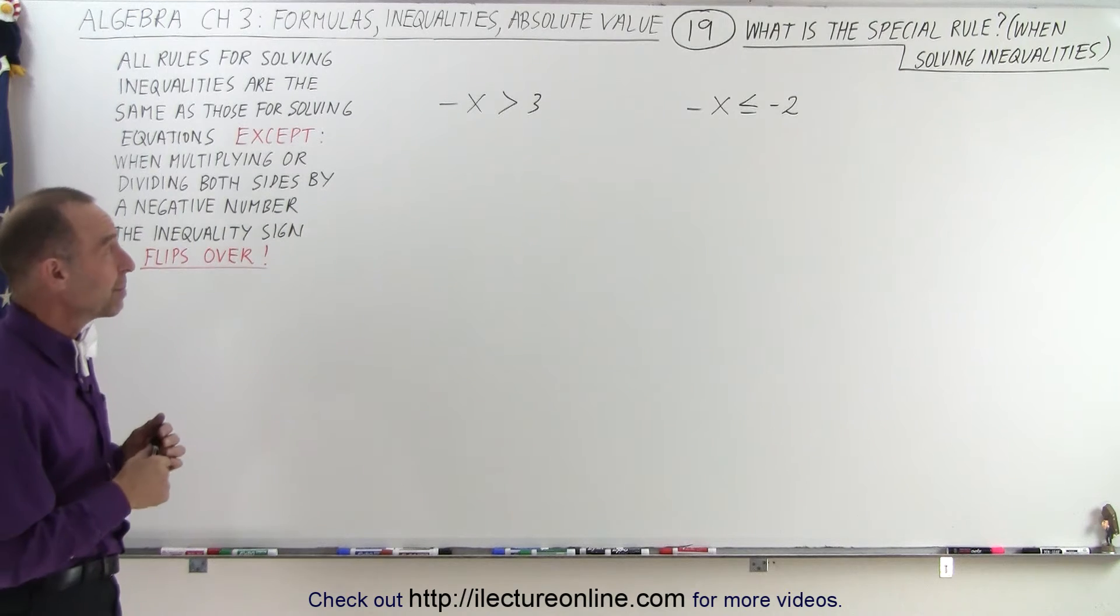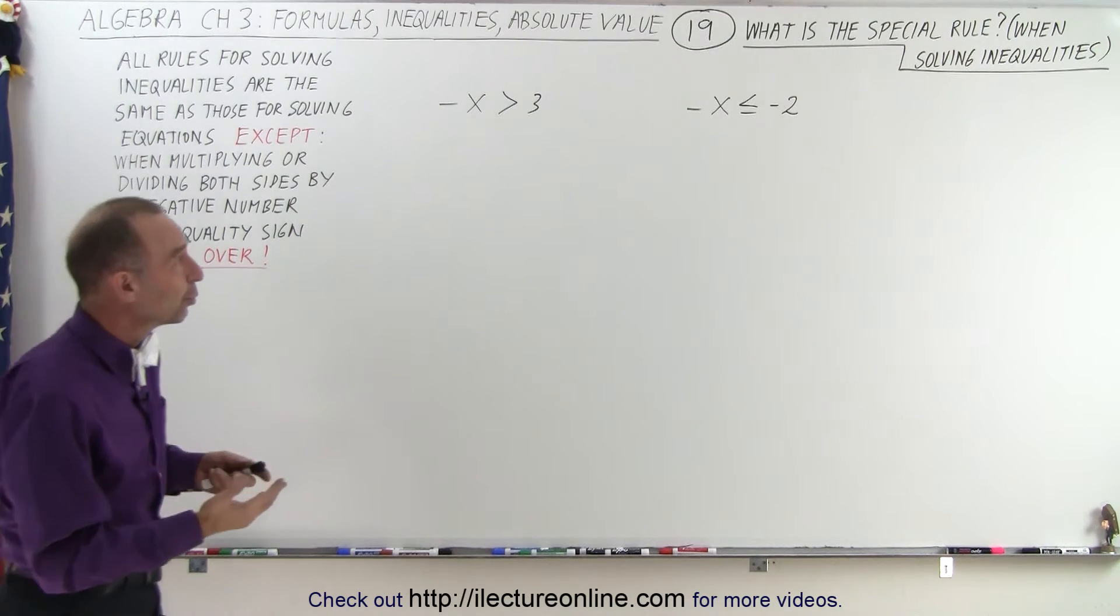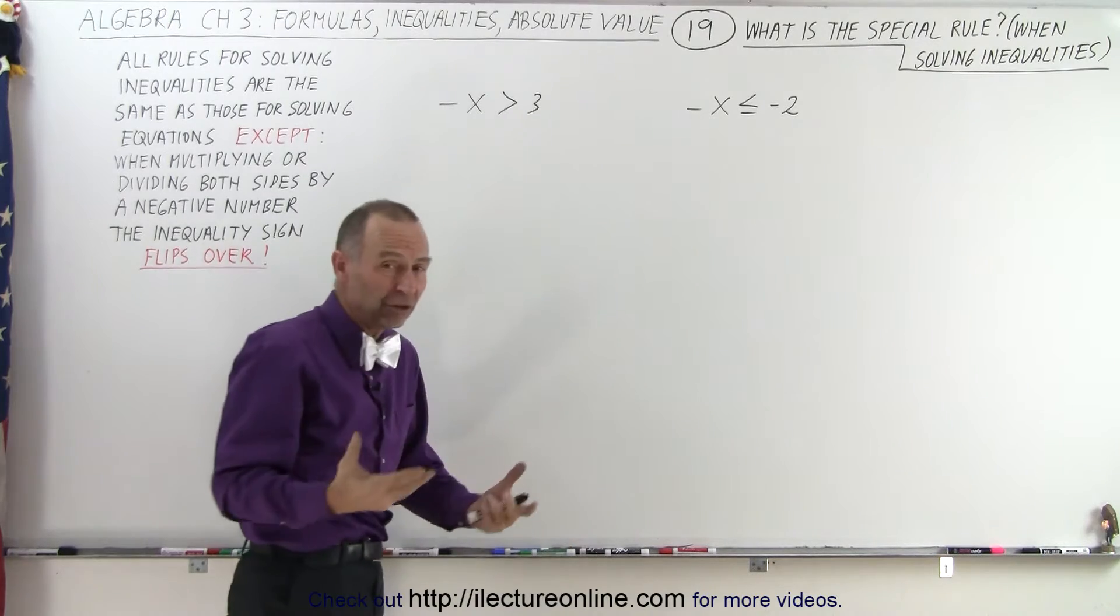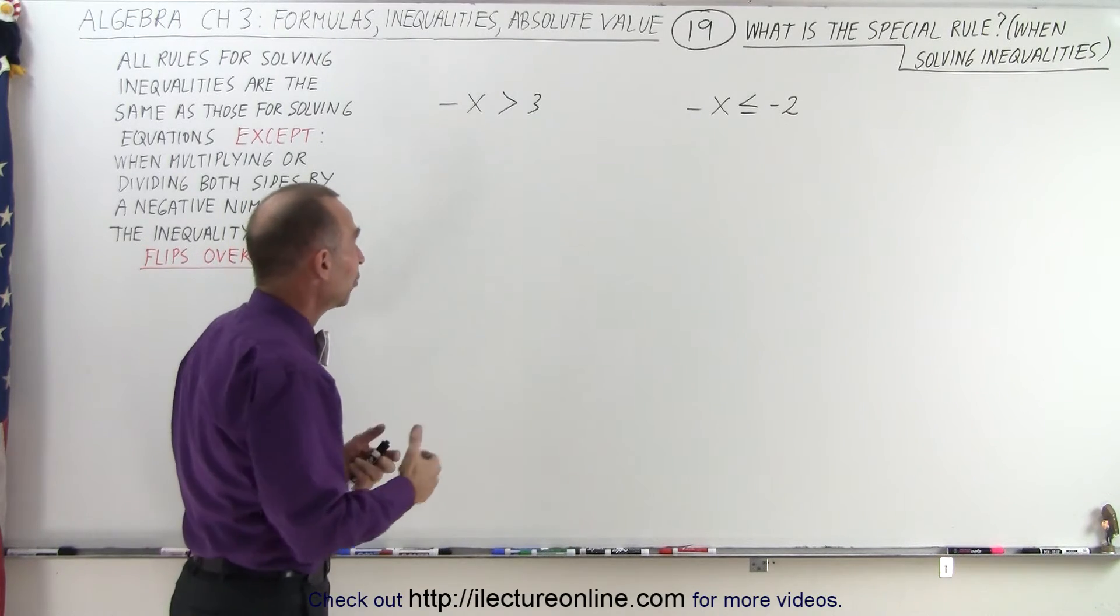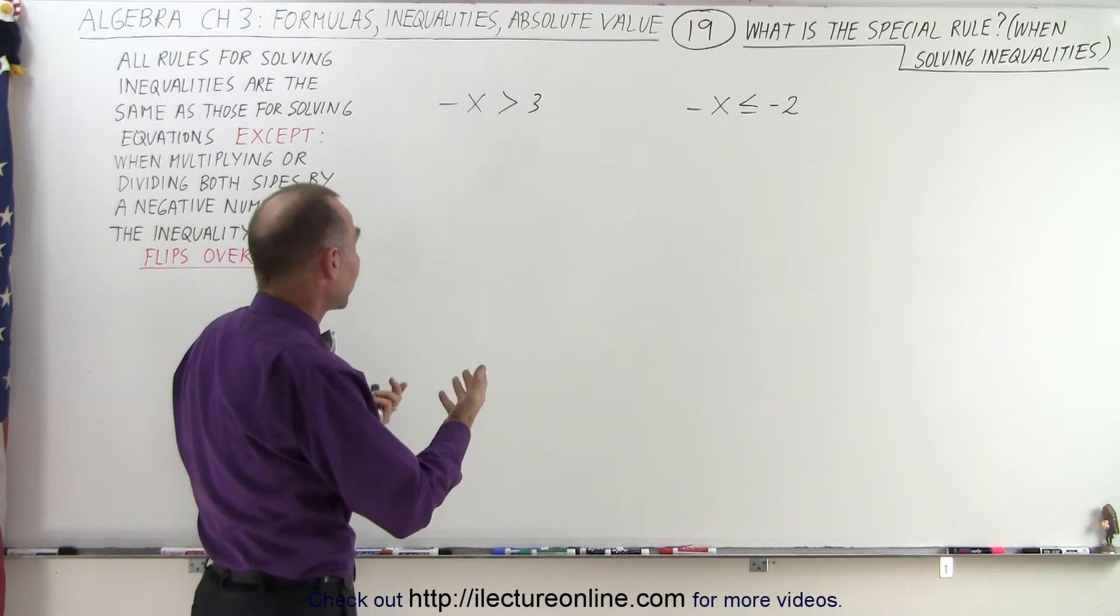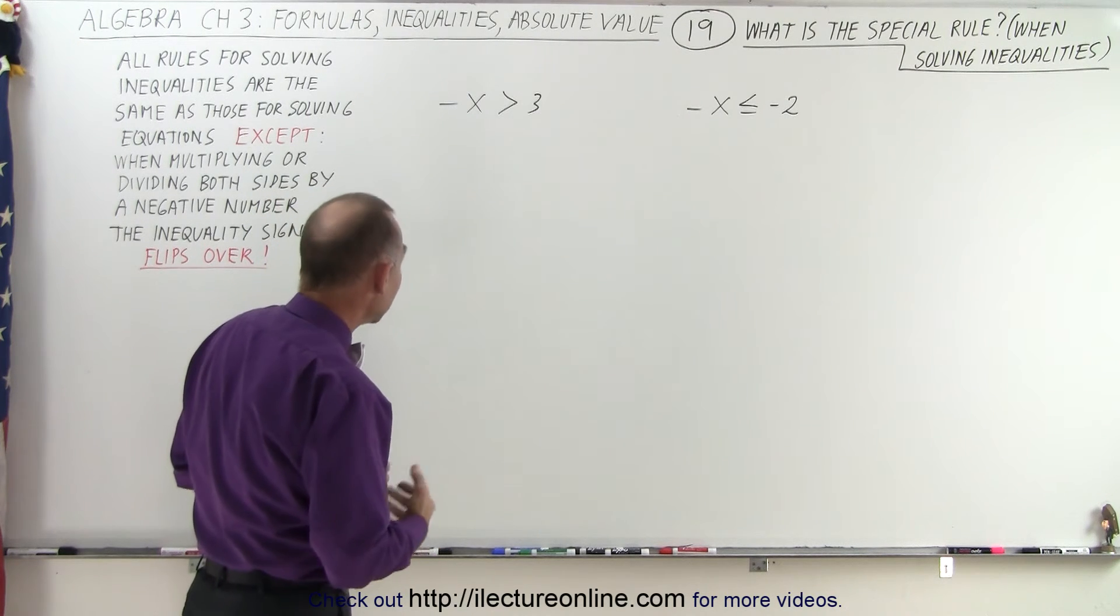So let me illustrate what we mean by that. Sometimes we see that we have a negative sign in front of the x or in front of an expression including x. And so we want to get rid of that negative sign, and we can do that by multiplying or dividing both sides by a negative number.